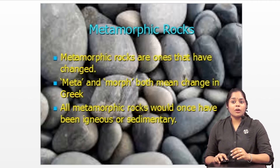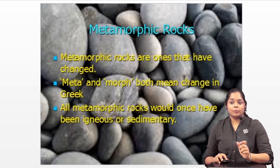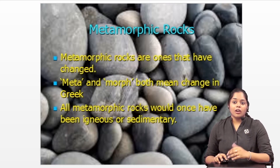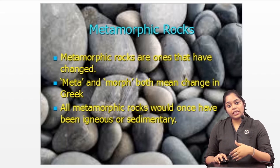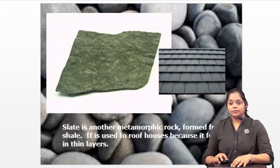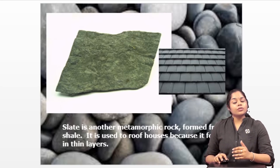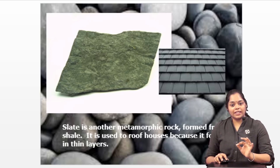Metamorphic rocks are ones that have changed. Meta and morph both mean change in Greek. All metamorphic rocks would once have been igneous or sedimentary rock. Slate is another metamorphic rock formed from shale. It is used to roof houses because it forms in thin layers.